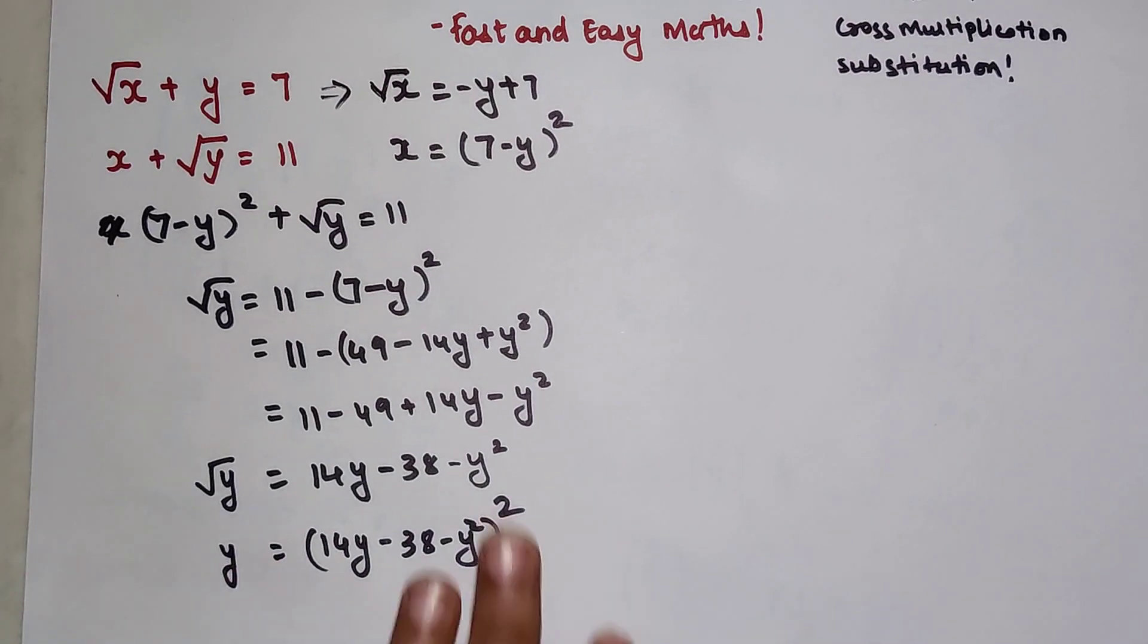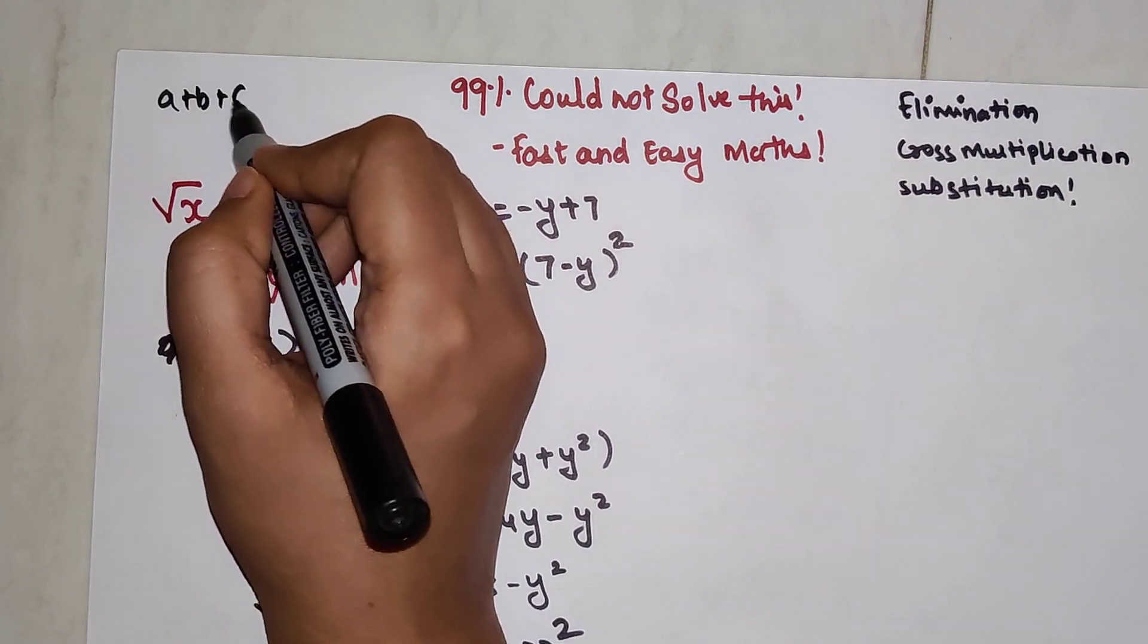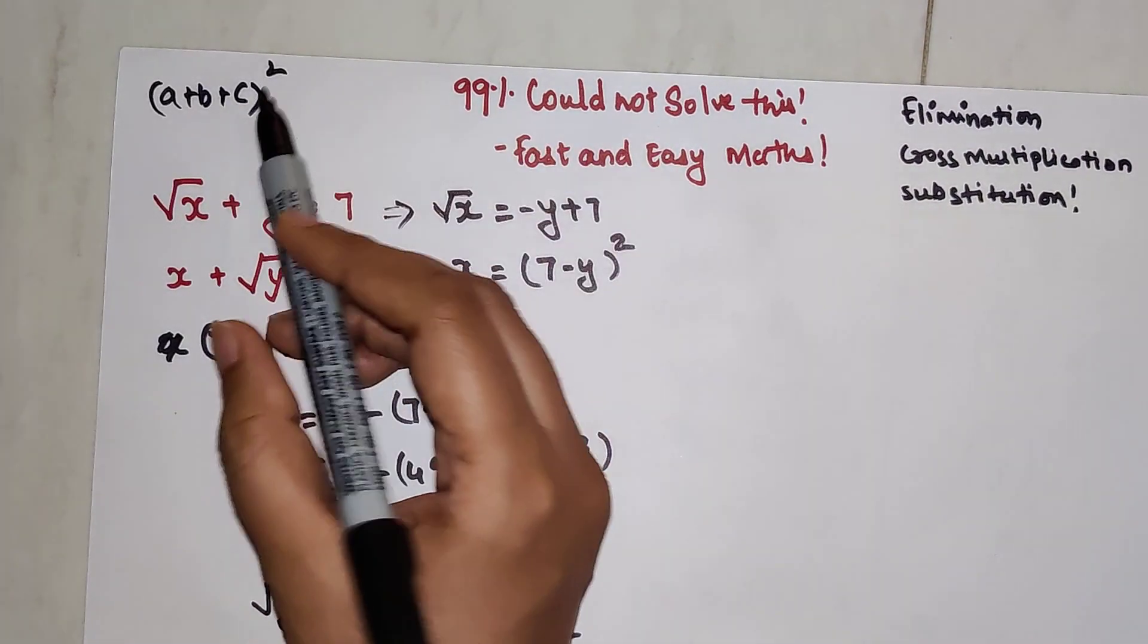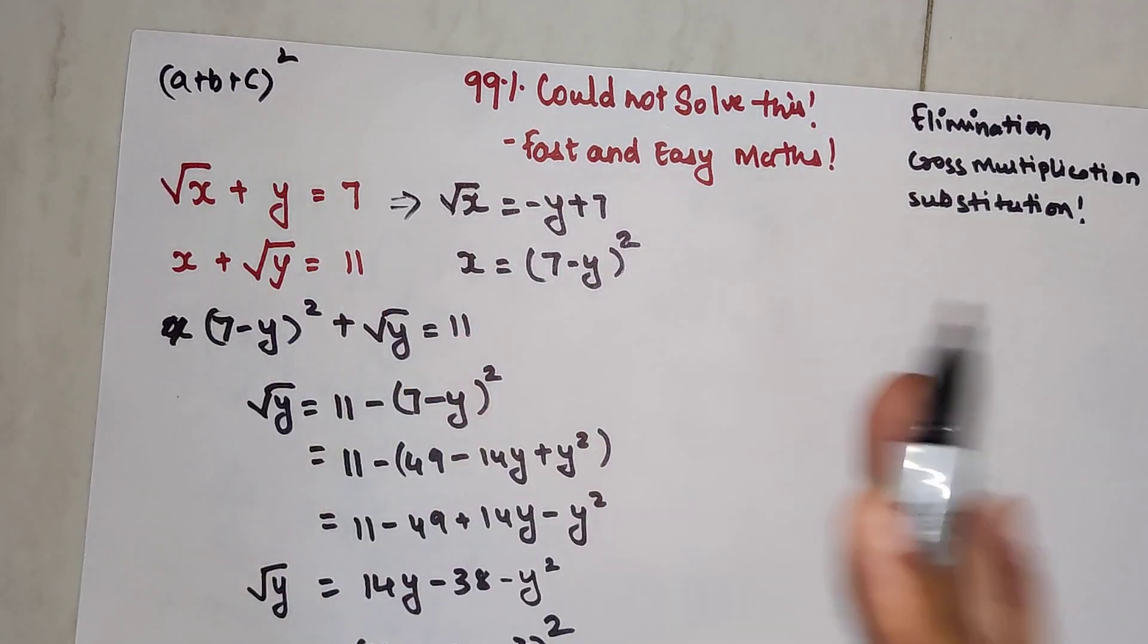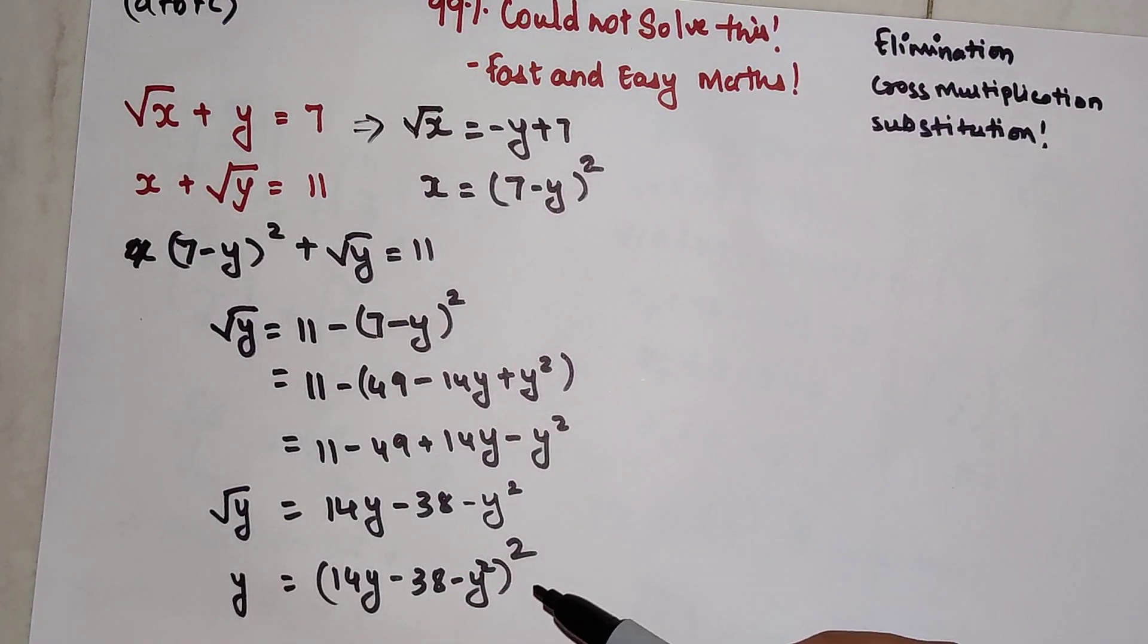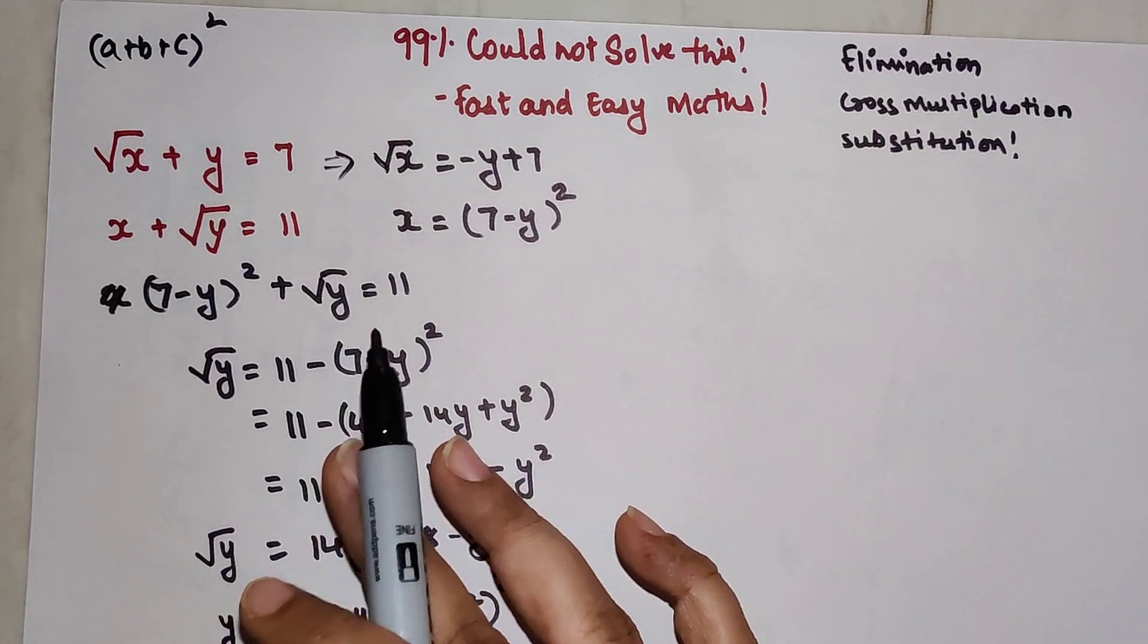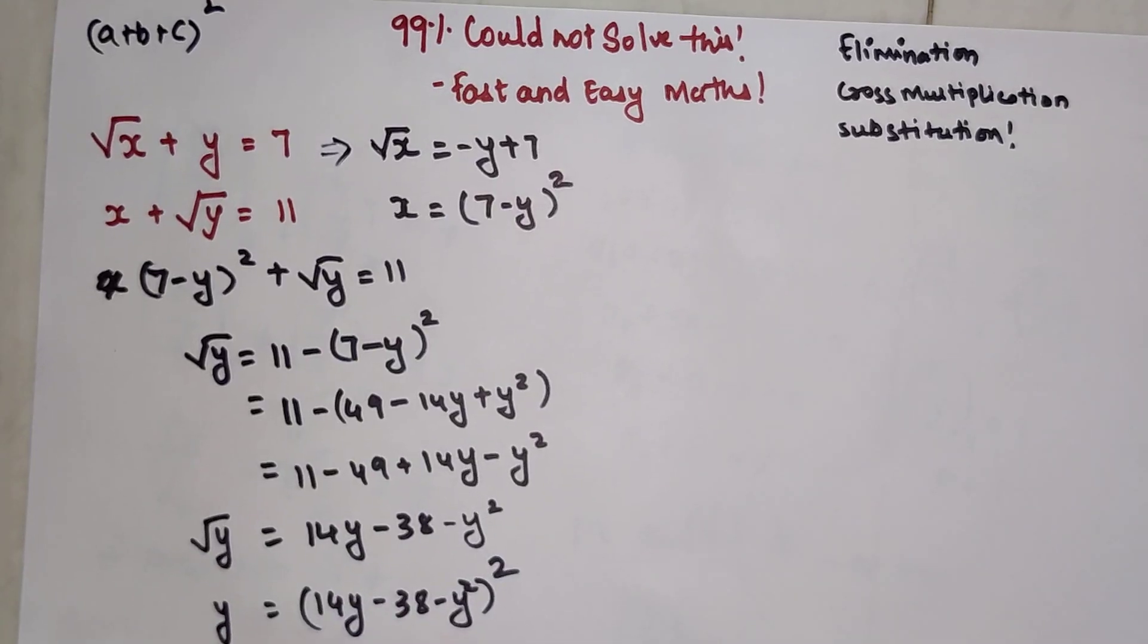We need to find the value of y, so that becomes 14y minus 38 minus y square the whole square. Here we have three terms: this will look like a plus b plus c the whole square, and the expansion is very big. I'm not saying you won't be able to find x and y, but it will take more than an hour.